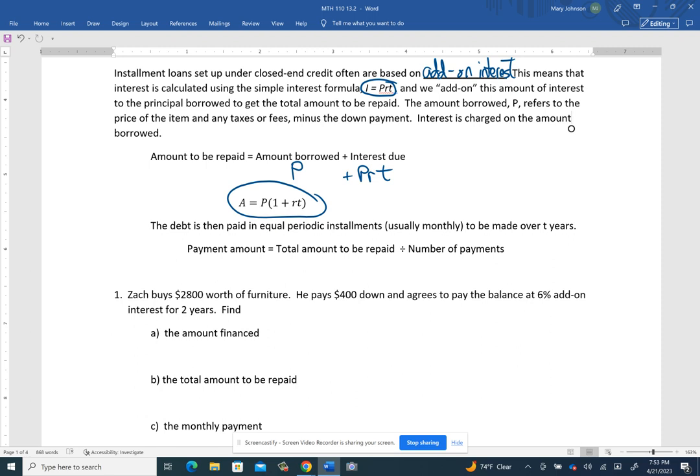Then this debt, this amount that we borrowed is going to be paid in equal periodic installments. And that's usually monthly over a set number of years that you've agreed on. So you can take the total amount to be repaid and divided by how many payments you're going to wind up making.